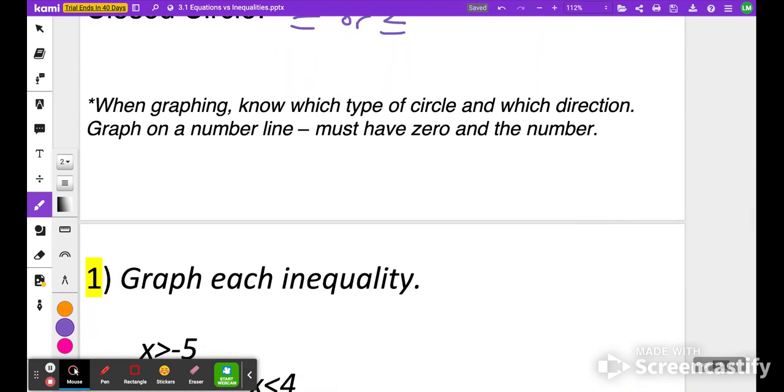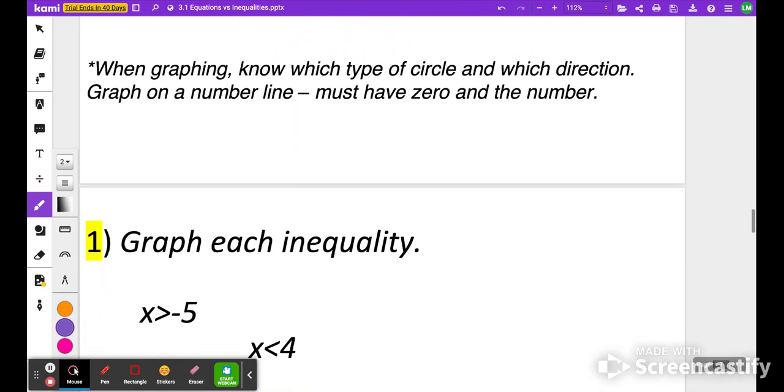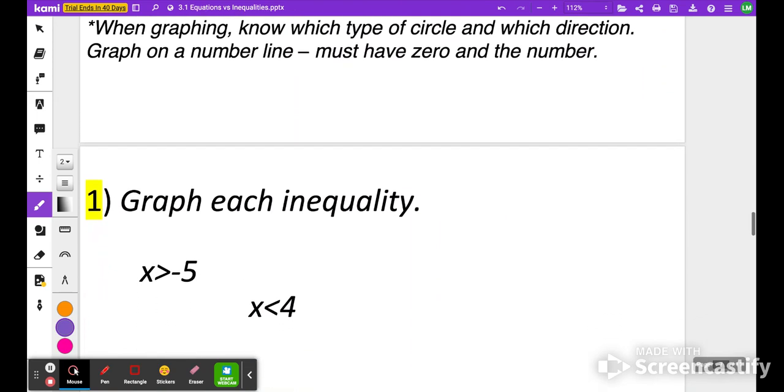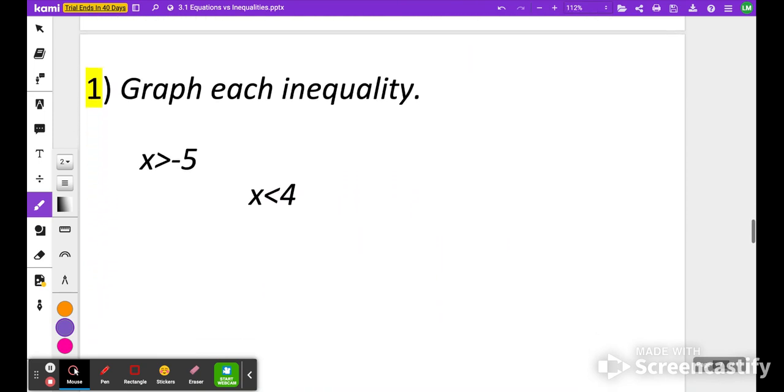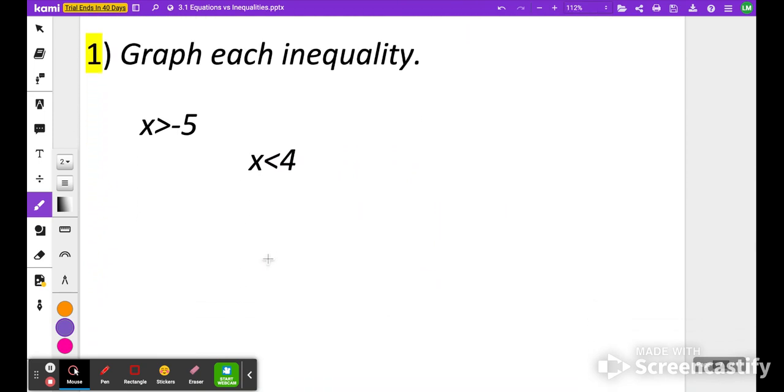When we are graphing, we have to know the type of circle and which direction. We're going to work on graphing on a number line, and we must have a zero and the number.